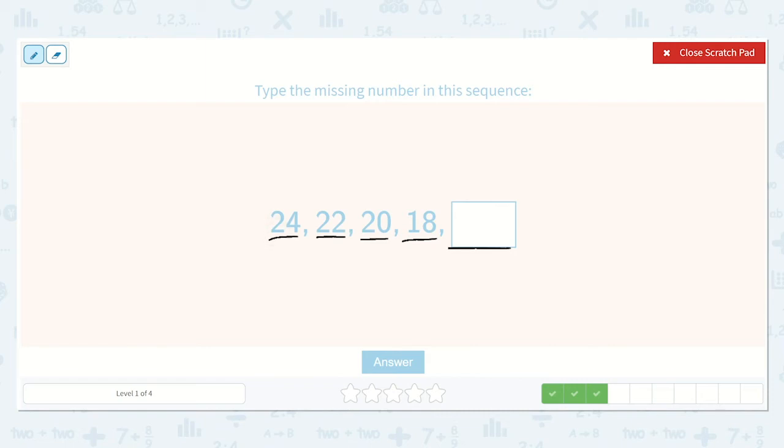So 24, take away 2, is 22. 22, take away 2, is 20. 20, take away 2, is 18. 18, take away 2, is... Do you know? Well, let's see. So we know. We go 24, 23, 22, 21, 20, 19, 18, 17, 16. Ah, so our missing digit is 16.